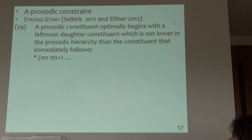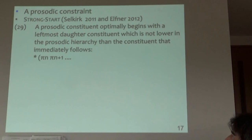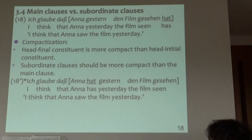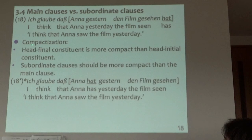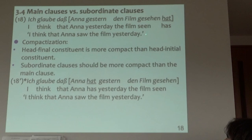We can think of the prosodic constraint proposed by Selkirk and Elan 2012: strong start. Japanese observes this strong start, but German doesn't — German allows weak start. This is the main clause versus subordinate clause difference. If you have 'Ana gishtan te kim gezen ha,' this is okay. So I have to assume something like compactness of subordinate clauses: subordinate clauses should be more compact than main clauses, and head-final constituents are more compact than head-initial constituents.